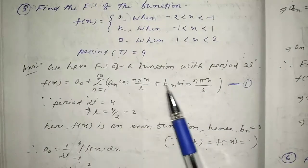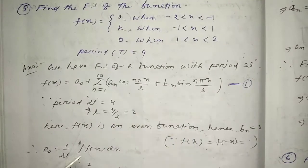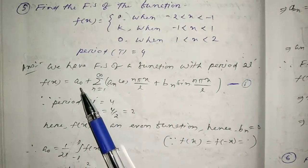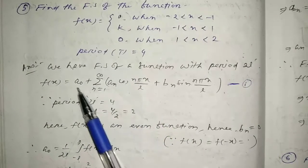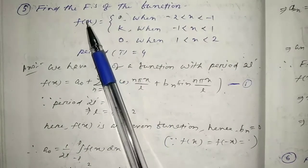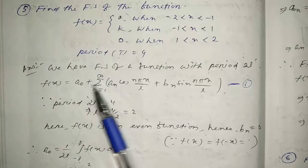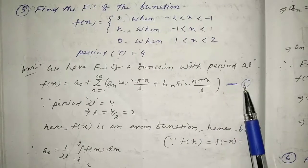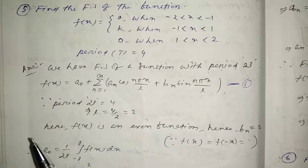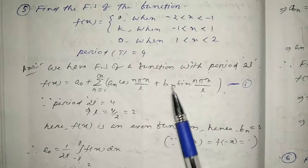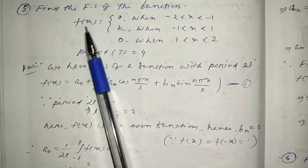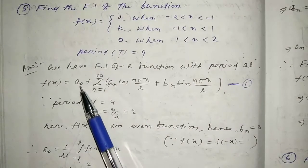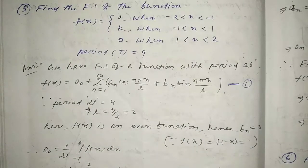Now we need to find the Fourier coefficients a0, an, and bn. We will calculate each value separately using the respective formulas, then substitute back into equation 1 to get the Fourier series of f(x) in the interval -2 to 2.